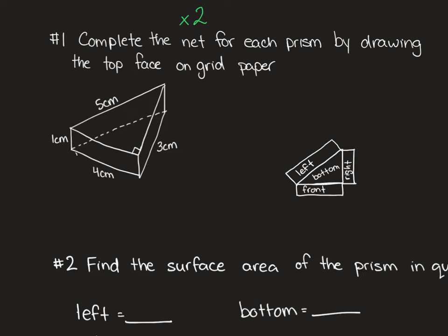So they'll ask you to complete the net for each prism by drawing the top face on grid paper. They will have given you a three-dimensional prism like this one with the different measurements. So we have a triangular prism, and so they've told us the three sides of the triangle and the height of the prism itself.